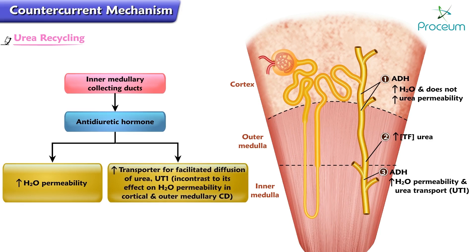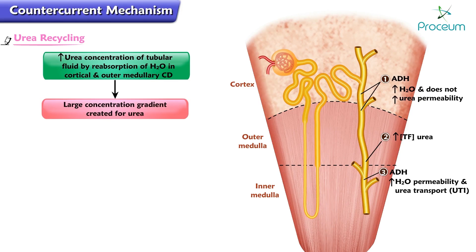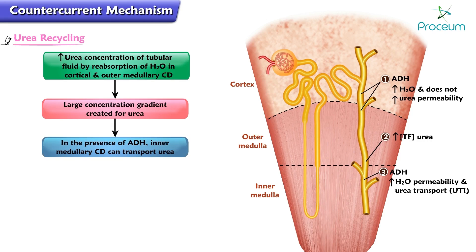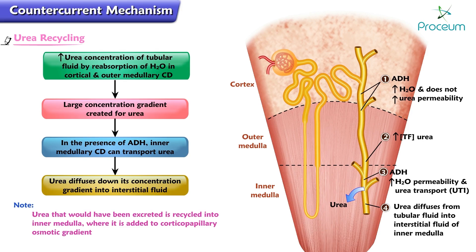This is in contrast to ADH's effect on only water permeability in cortical and outer medullary collecting ducts. Since the urea concentration of the tubular fluid has been elevated by water reabsorption in the cortical and outer medullary collecting ducts, a large concentration gradient for urea has now been created. In the presence of ADH, the inner medullary collecting ducts can transport urea, and urea diffuses down its concentration gradient into the interstitial fluid. Urea that would have otherwise been excreted is now recycled into the inner medulla, where it is added to the corticopapillary osmotic gradient.